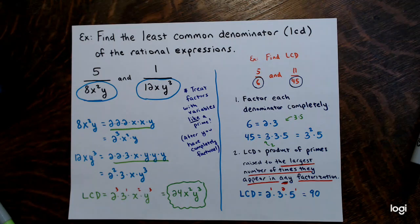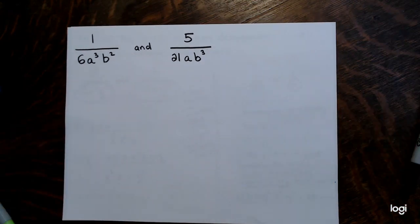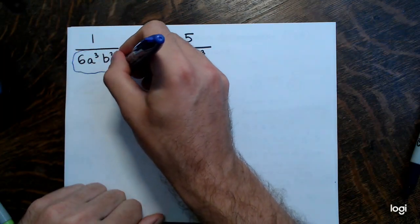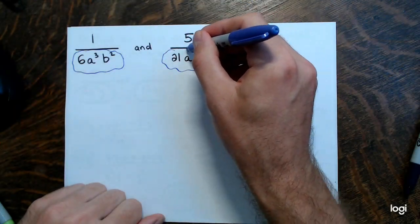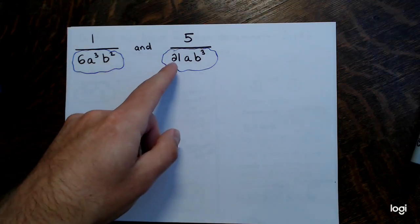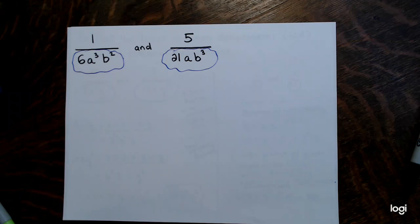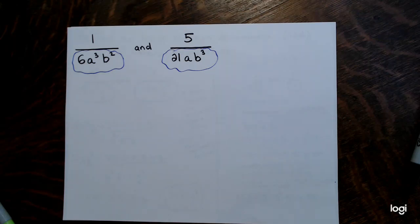Here is another example where the denominators are both monomials with a couple of variables. We are finding the least common denominator of 1 over 6a cubed b squared and 5 over 21ab cubed. The whole reason for finding the LCD is so that later we can make the denominators the same and then add or subtract the fractions — and it's best if the common denominator is the smallest possible.